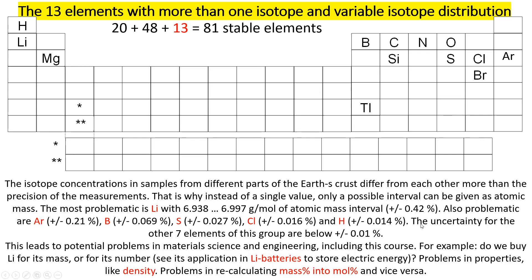Similarly problematic are argon, boron, sulfur, chlorine, and hydrogen — so altogether six problematic elements for which the atomic masses are not known with the required accuracy. However, the rest of the seven elements in this group have uncertainties below 0.01%, so for those seven elements it is not a practical problem when working with four-digit accuracy.